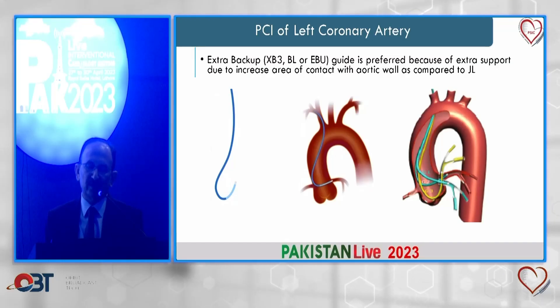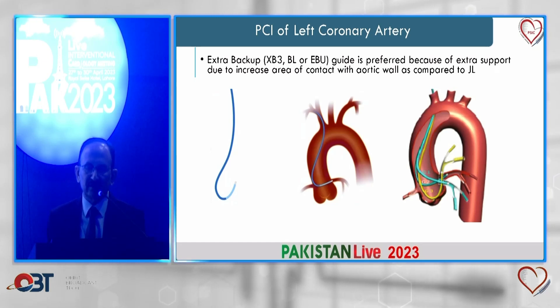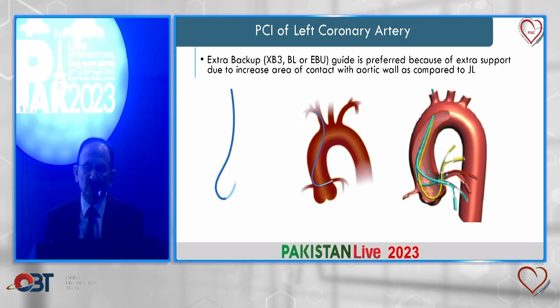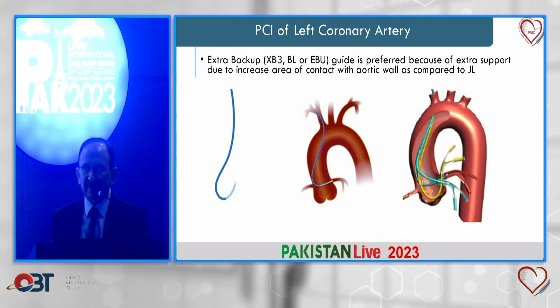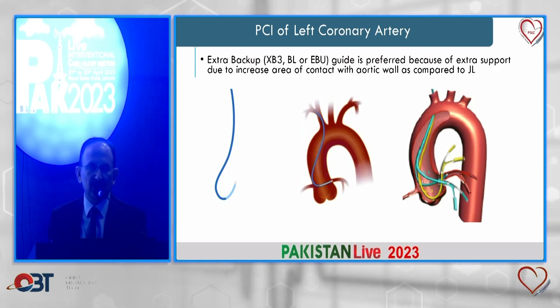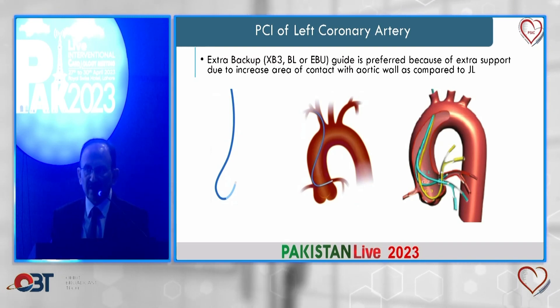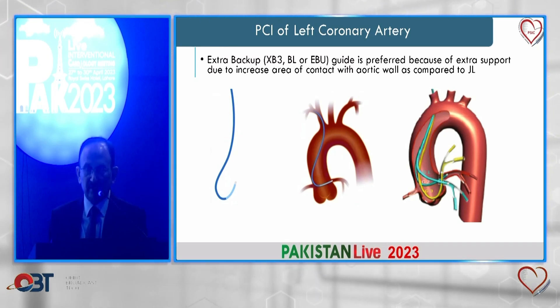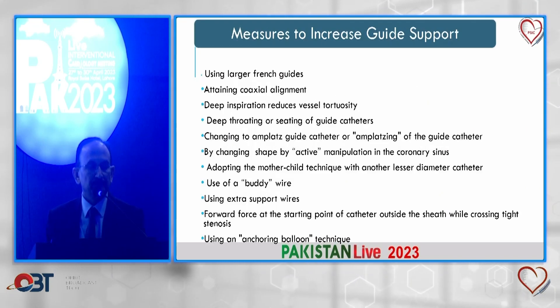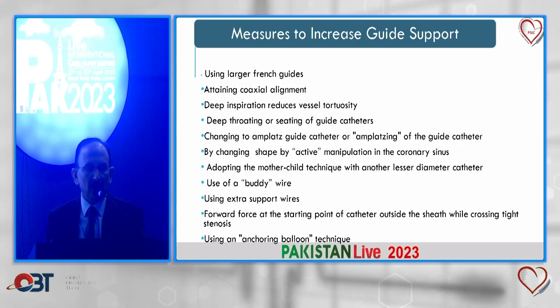Here you can see extra backup guides: XB, BL, and EBU. In the last picture, guides of different sizes are shown. For example, a GC 3.5 sits coaxially into a horizontally directed left main. If the left main is directed downward, you need a 0.5 millimeter bigger size guide; if directed upward, a 0.5 millimeter smaller guide.